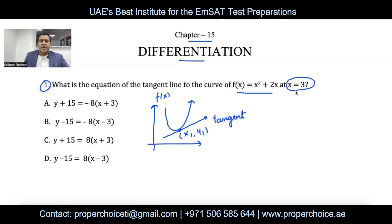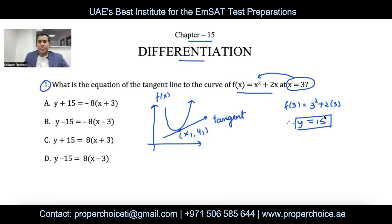To find y₁, substitute x = 3 into the equation: f(3) = 3² + 2(3) = 15. So the coordinate point is (3, 15). Sometimes these values are given in the exam; sometimes you have to find y the way we just did. Once you have the coordinate point, what is the next step?